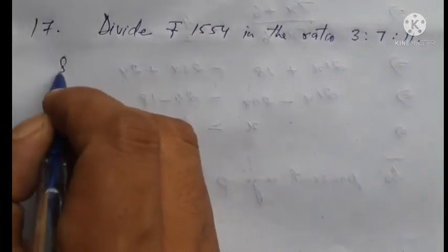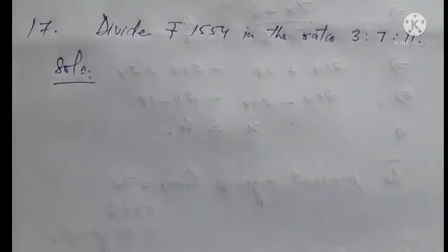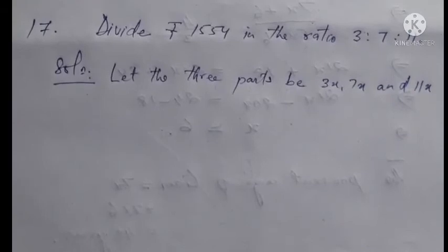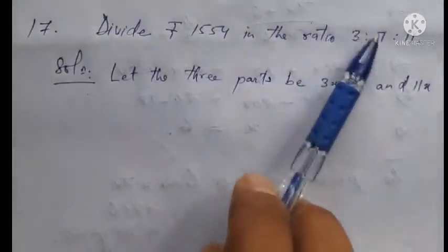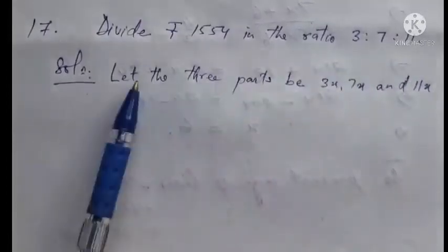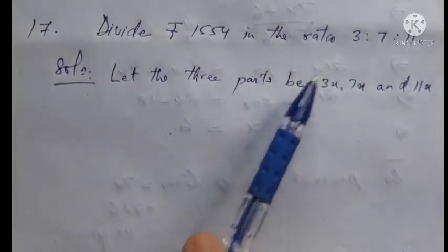We need to divide this amount in the ratio 3 is to 7 is to 11. Let the three parts be 3x, 7x, and 11x.